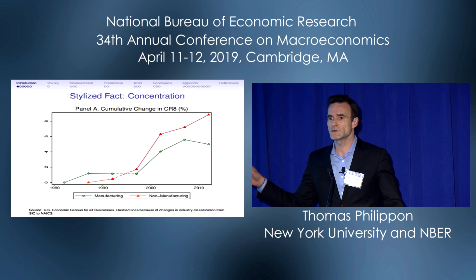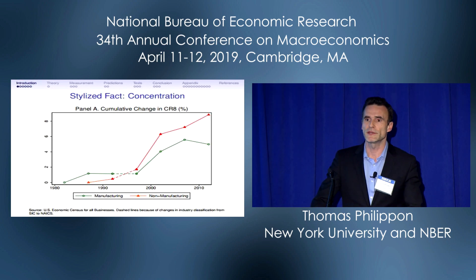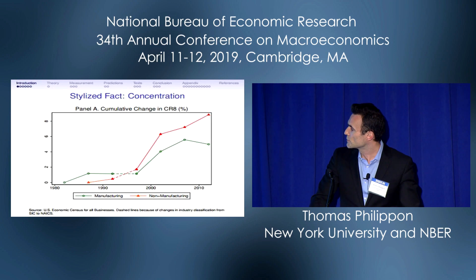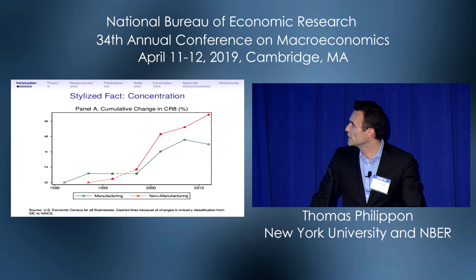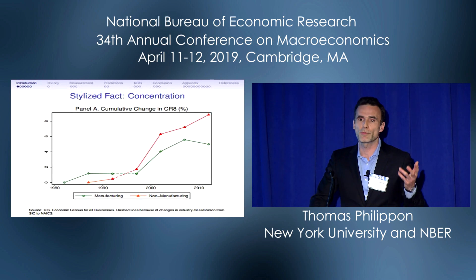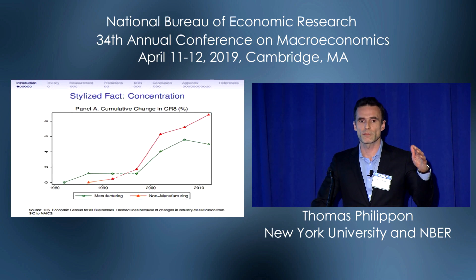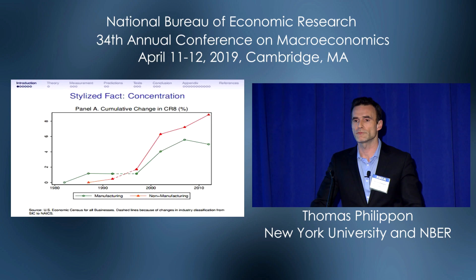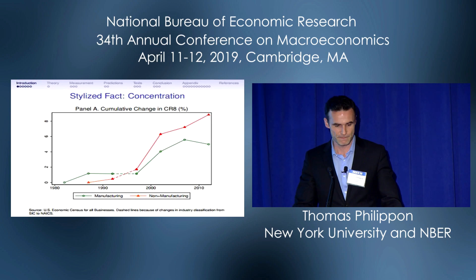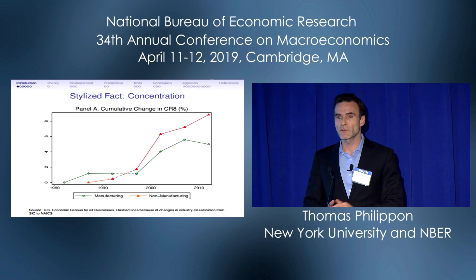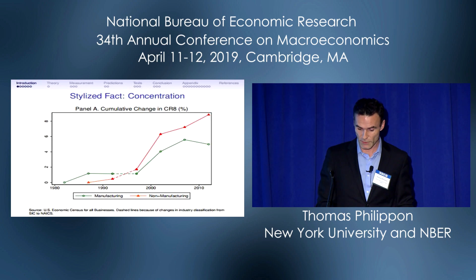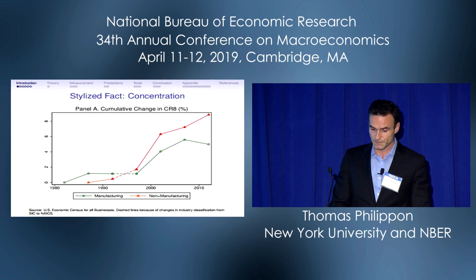The dotted line in the middle is because there's a change from SIC to NAICS code, so it's not exactly comparable. As you can see, CR8 went up by about eight points in the US from a baseline of about 0.3 — so think of it as going from 0.3 to 0.38 on average. That's the fact, but there's much disagreement about what this fact means, so we're going to try to make sense of it.